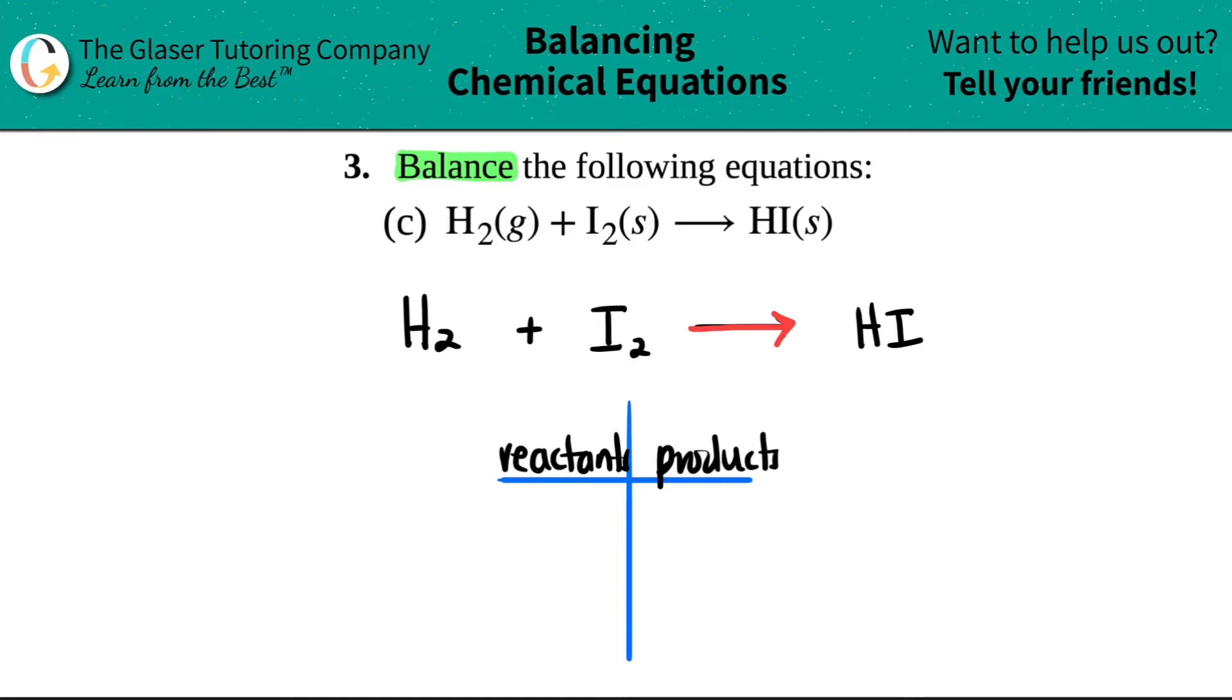We have to list our elements. I like to just start from the reactant side, go from left to right, and just write what elements I have. Specifically here, I have H and I have I.